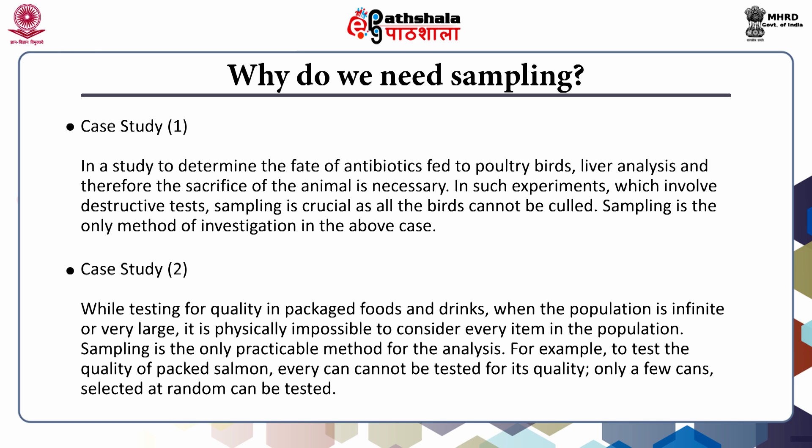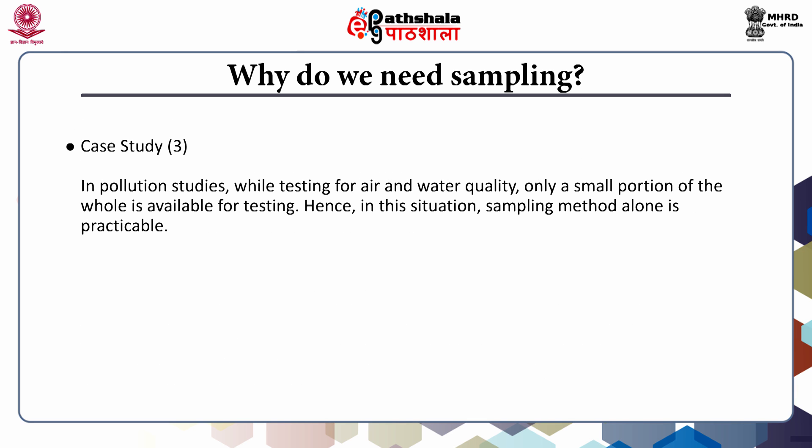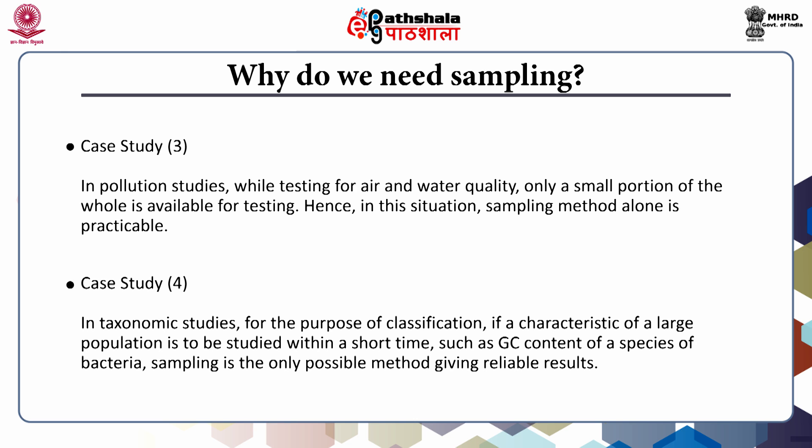Only a few cans of salmon selected at random can be tested. Case study 3: in pollution studies, while testing for air and water quality, only a small portion of the whole is available for testing. Hence, in this situation, sampling method alone is practicable. Case study 4: in taxonomic studies, for the purpose of classification, if a characteristic of a large population is to be studied, sampling is the appropriate approach.